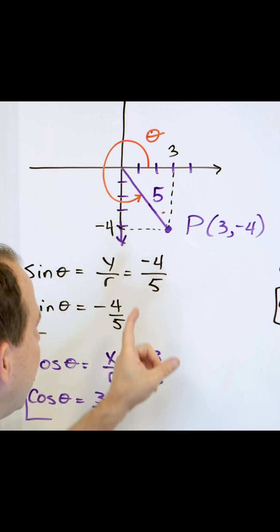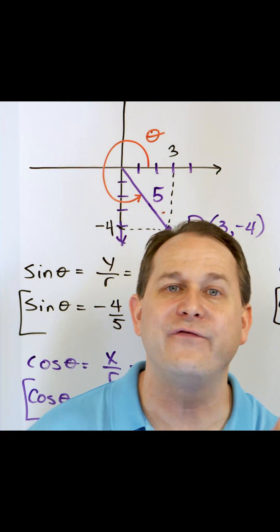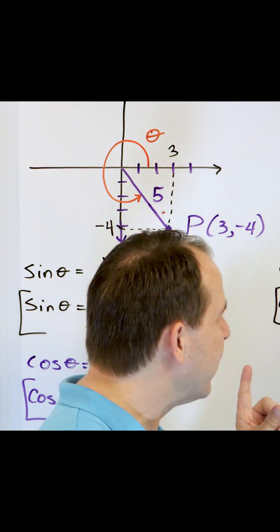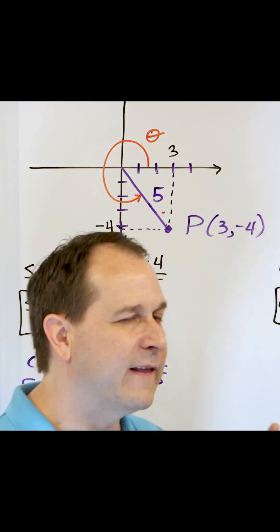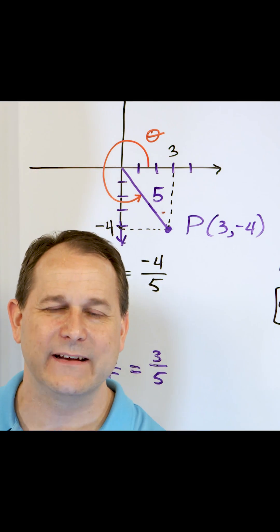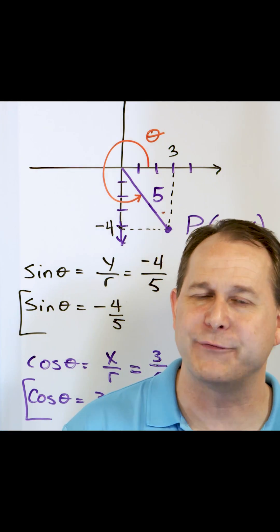In our case, our radius is not 1 — it's 5 times bigger than that. So another way to think of all these things is that the x, the cosine, is like the chopping factor for x.